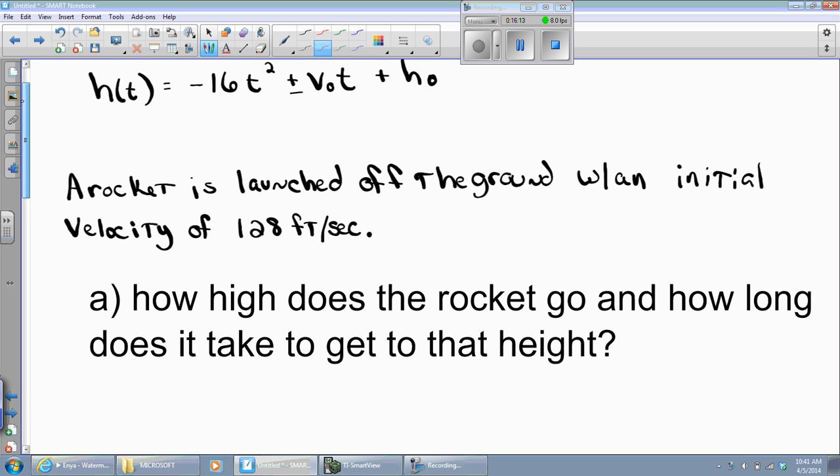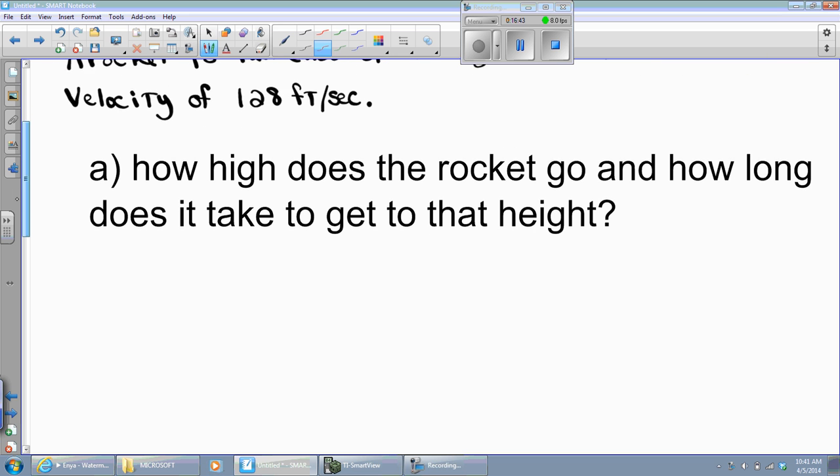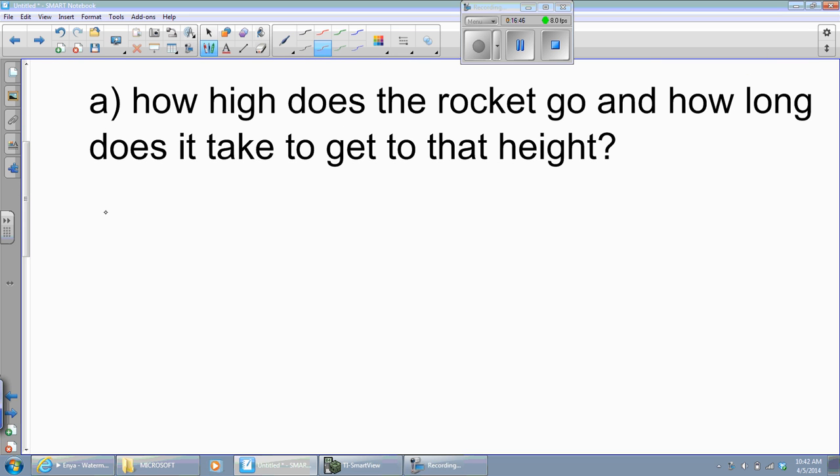Now let's talk about the story problems, which should have been super simple. Remember, this is your ending height, T is always your time, this is your starting velocity, and this is your starting height. We have a rocket being launched off the ground with an initial velocity of 128 feet per second. I can go h of t equals negative 16 t squared. My velocity was 128 feet per second. My starting height is the ground, so it's plus zero.